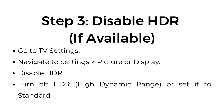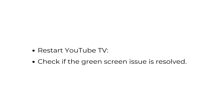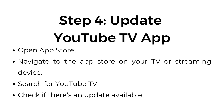Step 3: Disable HDR if available. Go to TV settings and navigate to Settings > Picture or Display. Disable HDR by turning off HDR (High Dynamic Range) or setting it to standard. Restart YouTube TV and check if the green screen issue is resolved.